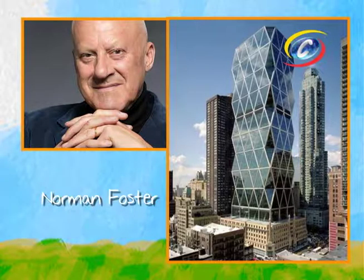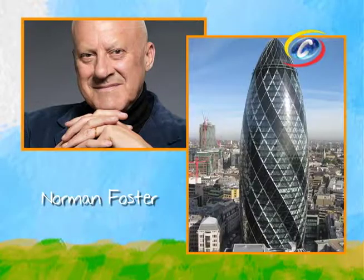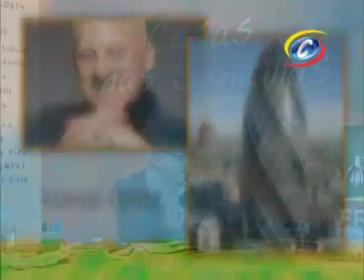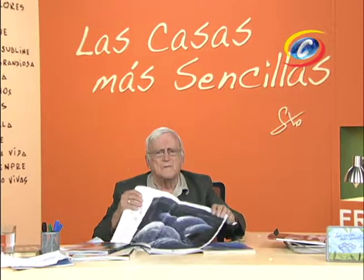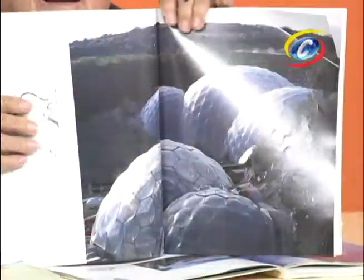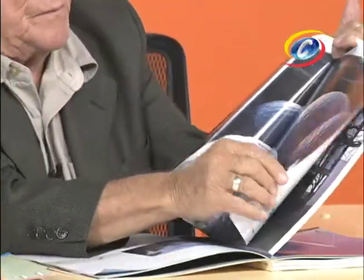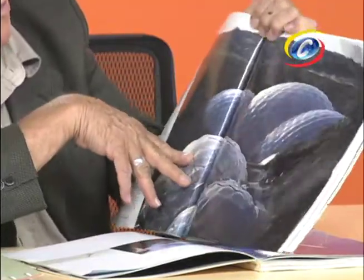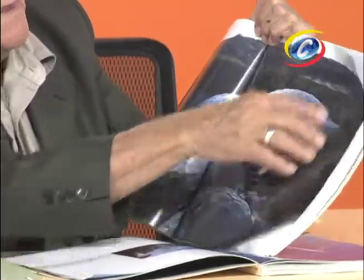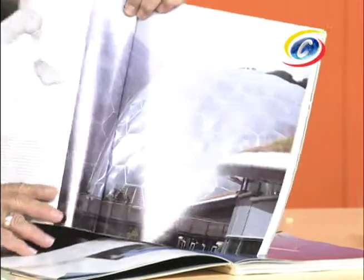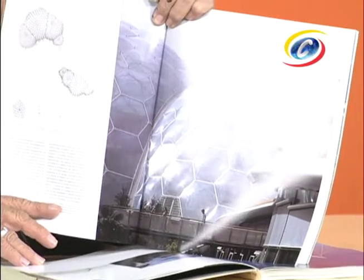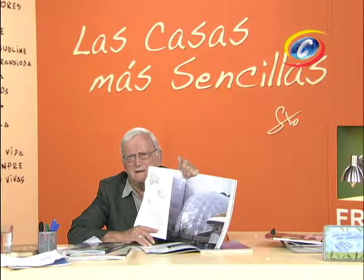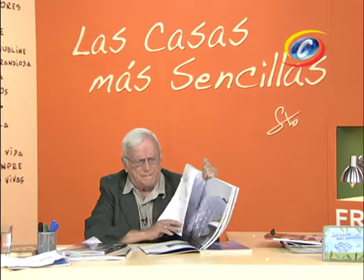Vamos a ver los rascacielos de Foster. Aquí tenemos también una obra extraordinaria realizada en burbujas similares a las de Fuller, con techo de plástico. Una cantidad de edificios hechos en burbujas de 50 a 80 metros de luz que están puestos en la montaña en Estados Unidos.